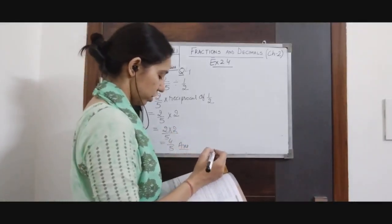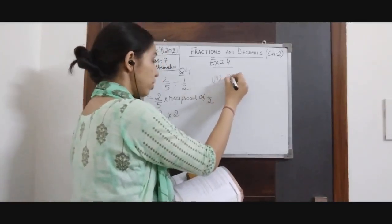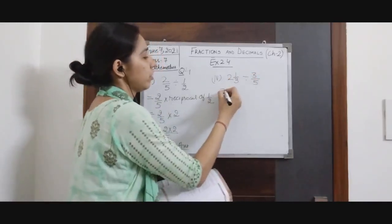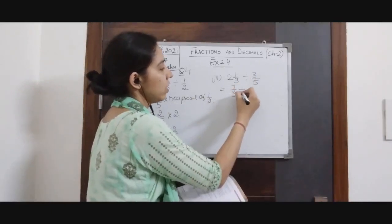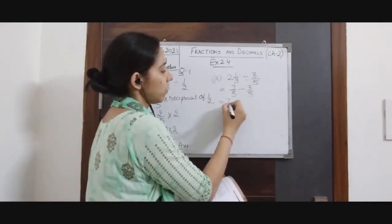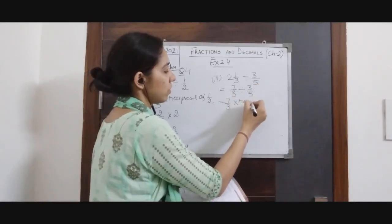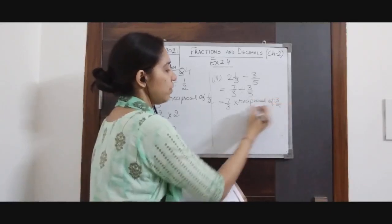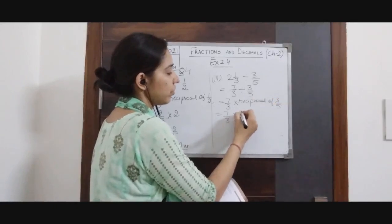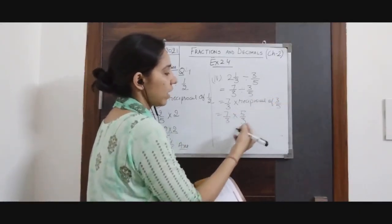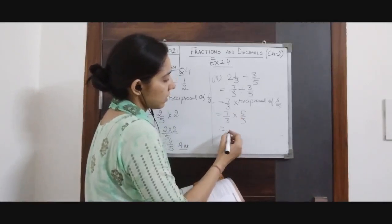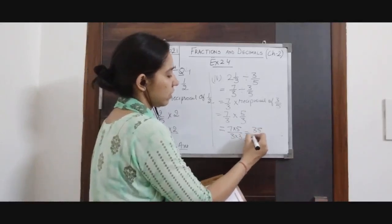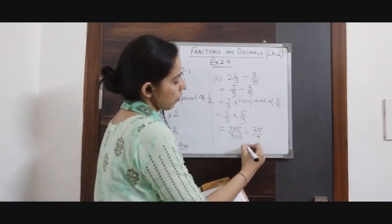Parts 2 and 3 are similar so we move on to part 4. Part 4 consists of a mixed fraction and a proper fraction: 6 and 1/3 divided by 3/5. Convert to improper fraction: 3 × 6 + 1 = 19... giving 7/3. It is equivalent to 7/3 × reciprocal of 3/5, which is 5/3. We can't cancel out anything, so 7 × 5 over 3 × 3 = 35/9. Again an improper fraction.